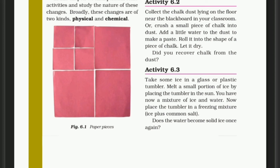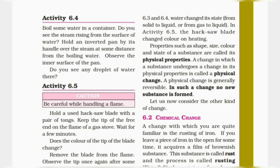We have another activity — Activity 6.4. Boil some water in a container. Do you see the steam rising from the surface of the water? Hold an inverted pan by its handle over the steam at some distance from the boiling water. Observe the inner surface of the pan — do you see any droplets of water there?